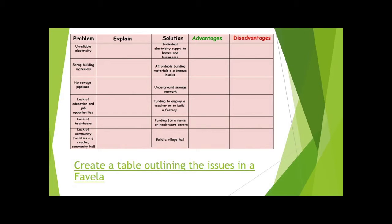On a brighter note, on the right we have solutions, and this is where it's more difficult because you need to evaluate and look at both sides. Individual electricity supply to homes and businesses — advantages: there's more use, there can be internet, connectivity, TVs, et cetera. Disadvantage: individually, this is going to be quite expensive. Affordable building — advantages: much more sturdy and strong than scrap building. Disadvantages: who is going to use these items, who is qualified to, how expensive will they be, and can you manoeuvre them through the favelas? Underground sewage network — advantages: less sewage in the streets, health benefits of not getting ill, and probably the smell.